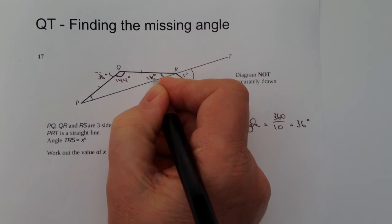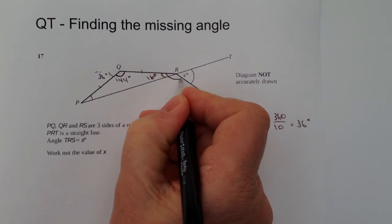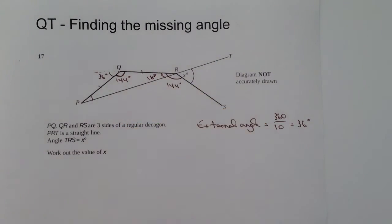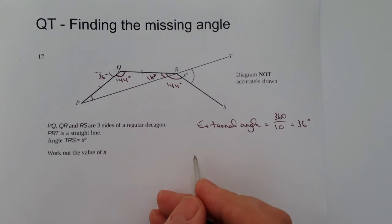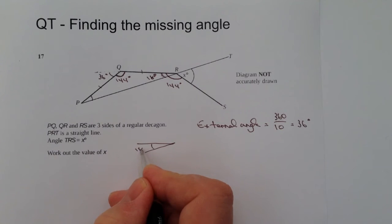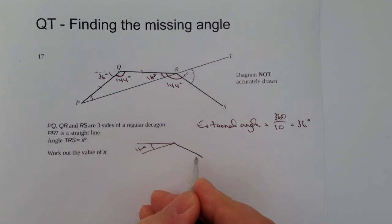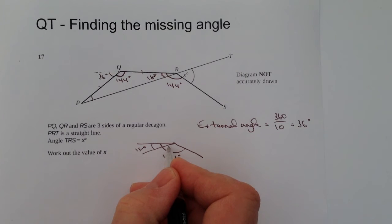So if this is 18 degrees, we also know, as we worked out before, that the internal angle of the decagon is actually 144 degrees. So if we look at that a little bit closer, we've got something like this. So this angle comes in at 18. And what we're saying is that overall, the angle is going to be 144 degrees. Well, that allows us then, if we take 18 away from 144, it means then that I can work out that this angle is going to be 126 degrees.